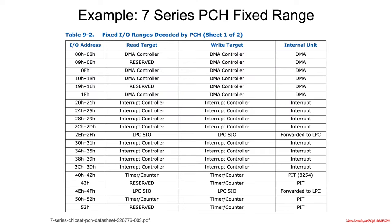We had seen things like this before in 2001. This is an example from a 7-series PCH — they have tables inside the datasheets, which you should have found by now, and you should be able to find this kind of table. The tables list both fixed and variable address ranges. Starting with the fixed ranges, you can see things like DMA controllers, interrupt controllers, and so forth.